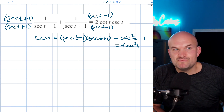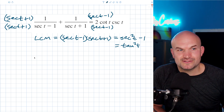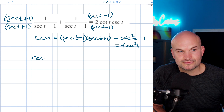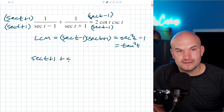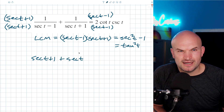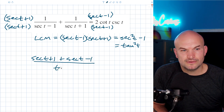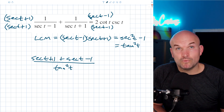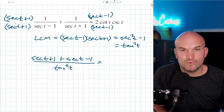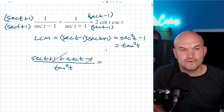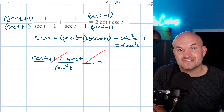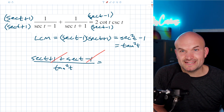In the numerator, I'm just multiplying by one, so look what I have: secant of t plus one plus secant of t minus one, all over tangent squared of t. The plus one and minus one are just going to go to zero, and I'm going to have two secant of t all over tangent squared of t.